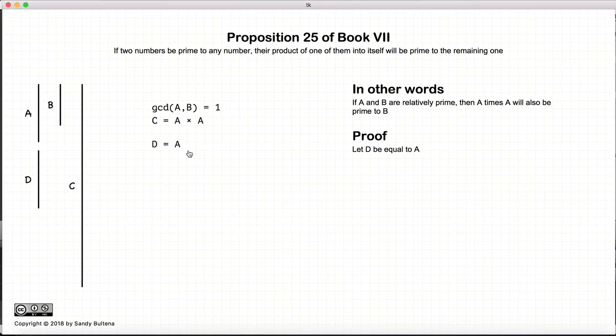So to prove this, let's create another number, d, which is equal to a. Now since a and b are relatively prime, and because a equals d, by logic, d and b are also relatively prime.